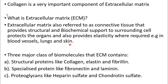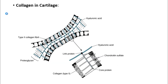Three major classes of biochemicals make up the extracellular matrix: structural proteins like collagen, elastin, and fibrillin; specialized proteins like fibronectin and laminin; and proteoglycans like heparan sulfate and chondroitin sulfate. These are the three basic components of the extracellular matrix.